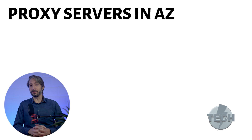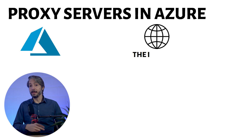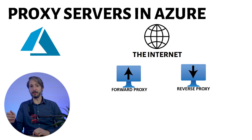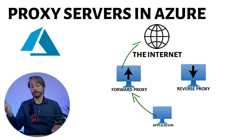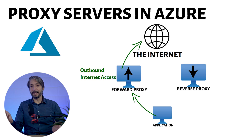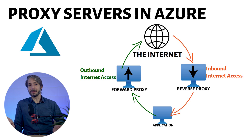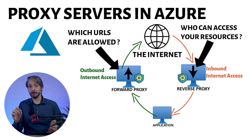While we will focus on the usage of proxy servers in Azure, we first need to start with the basics. There are two types of proxy servers: a forward proxy and a reverse proxy. A forward proxy allows resources such as virtual machines in your infrastructure to access the public internet — this is for outbound internet access. A reverse proxy allows external users from the public internet to access your internal resources. Security is the main driver for this. With a forward proxy, you can control which resources you can access on the public internet. The reverse proxy allows you to control who and what can access your internal resources.